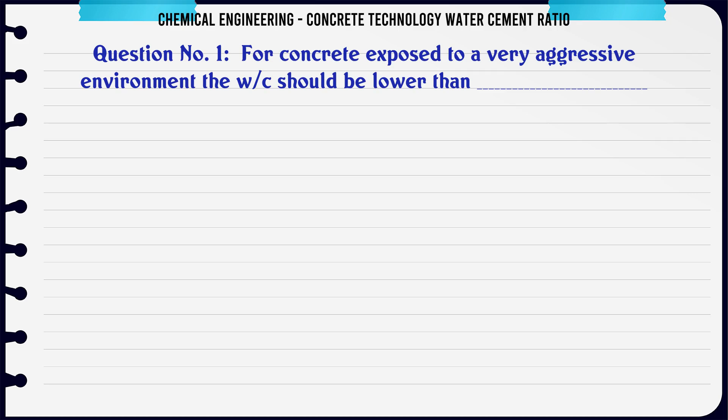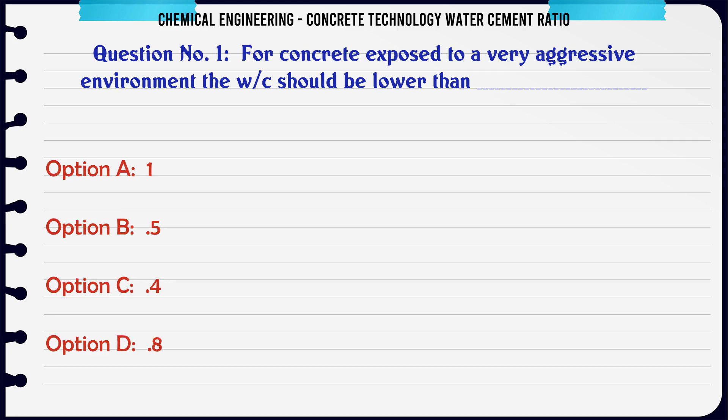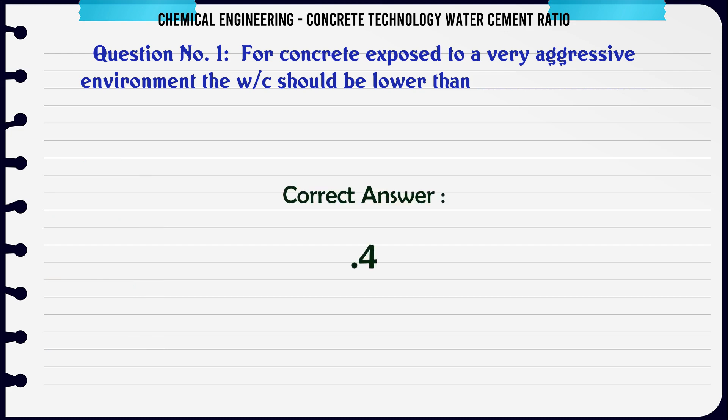For concrete exposed to a very aggressive environment, the W/C ratio should be lower than: A. 0.5, B. 0.5, C. 0.4, D. 0.8. The correct answer is 0.4.